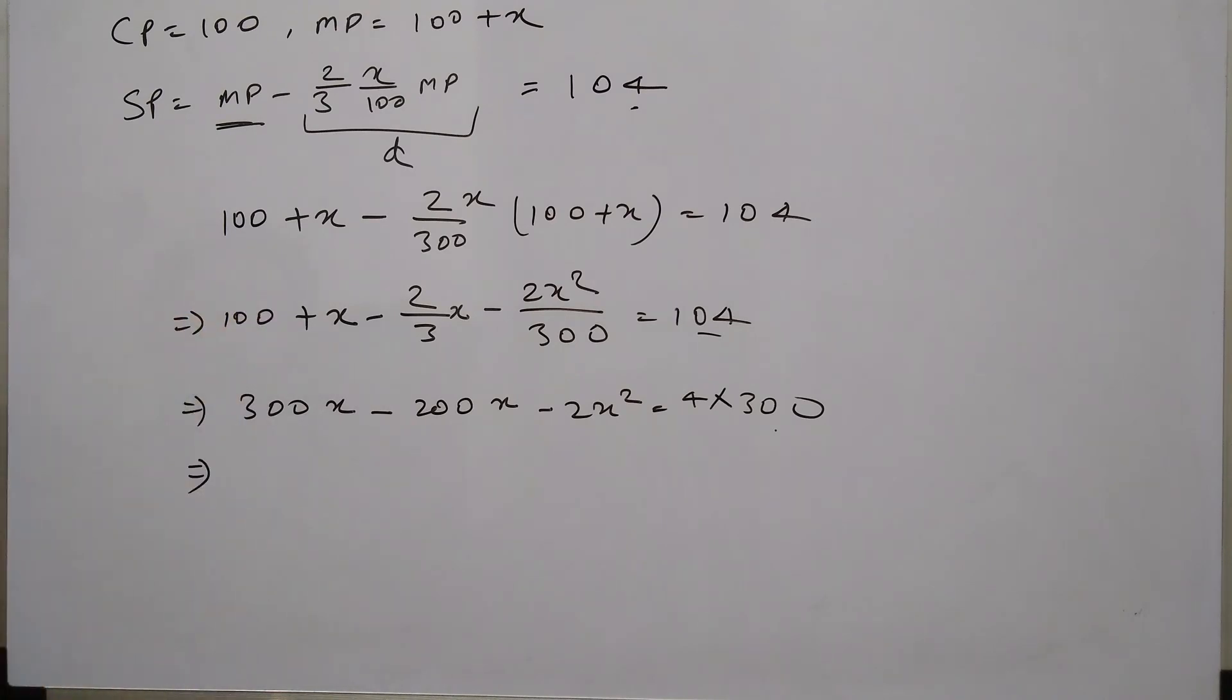So once you are able to apply the concept here, it's just solving the equation. So it's 2x squared, maybe 2 is common. So it's x squared minus 50x plus 600 equals to 0.